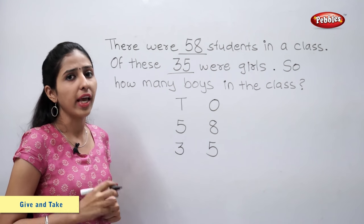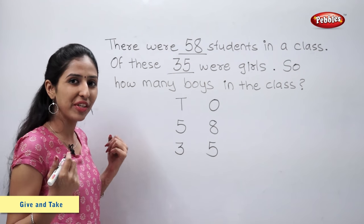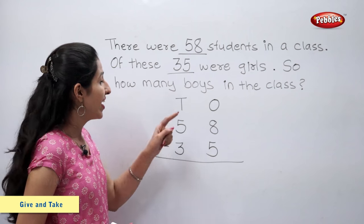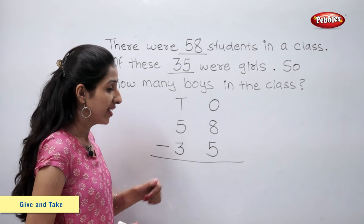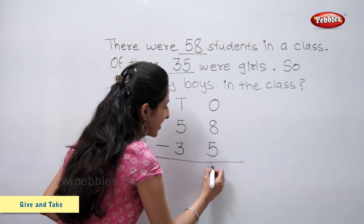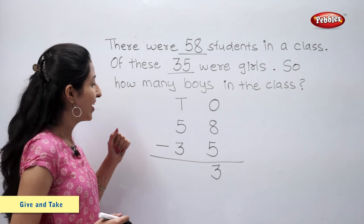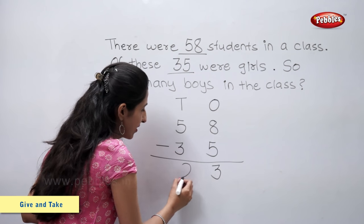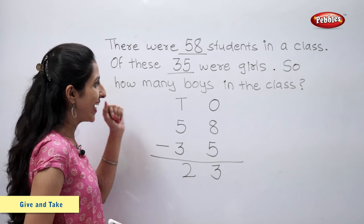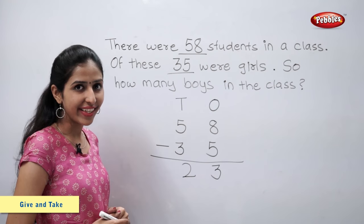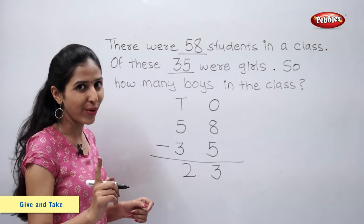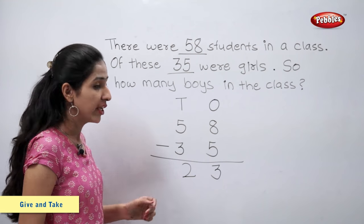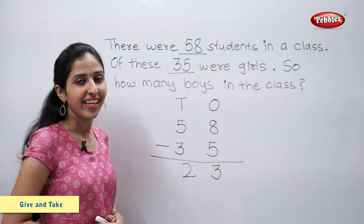Now, as we have to find the number of boys, we will subtract. Let us subtract ones first. Eight minus five is equal to three. Now we have two tens, three ones. That is the number 23. So, 58 minus 35 is equal to 23. There were 23 boys in the class.